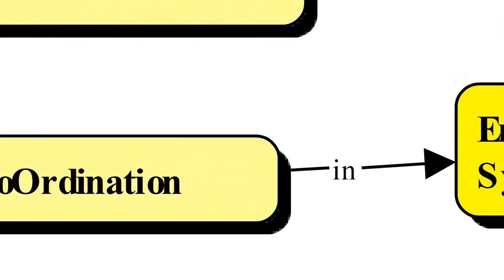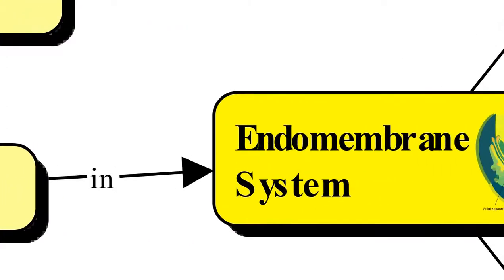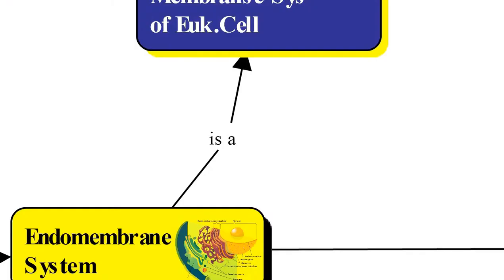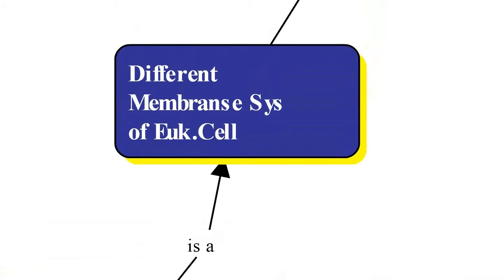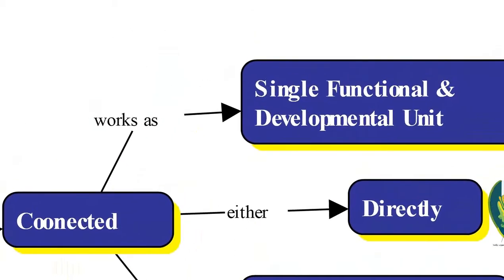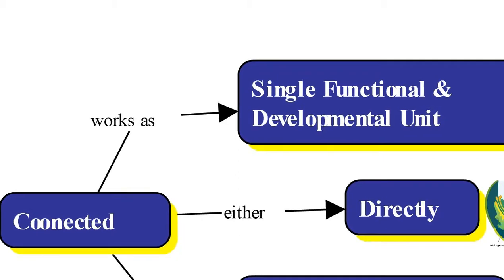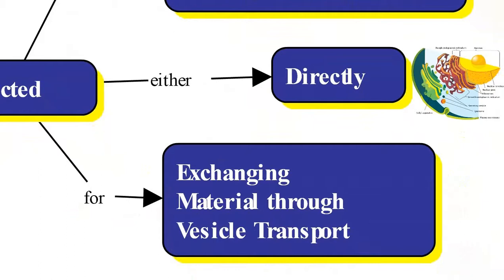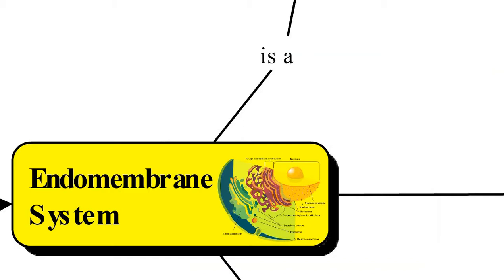The endomembrane system is a combination of different membrane systems in which different cell organelles of eukaryotic cells are connected either directly or indirectly, and they behave as a single functional and developmental unit. These organelles work in a coordinated manner by exchanging material through vesicular transport.